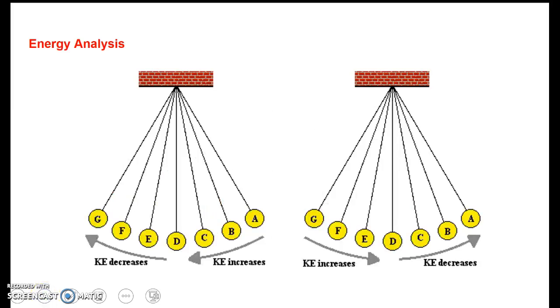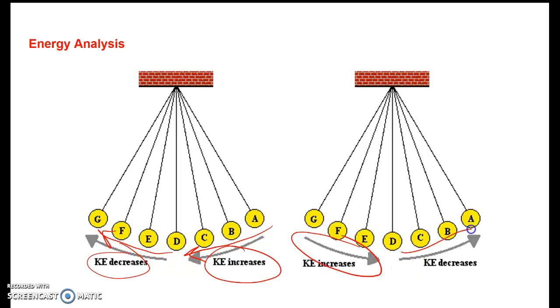Now what does this mean for energy? As we go this way, we go faster, which means kinetic energy increases. As we go up, we slow down, which means kinetic energy decreases. As we go back down again, it speeds up, kinetic energy increases. And as we go back up, we slow down, kinetic energy decreases. So when we look at kinetic energy in the pendulum, going down increases, going up decreases our kinetic energy.